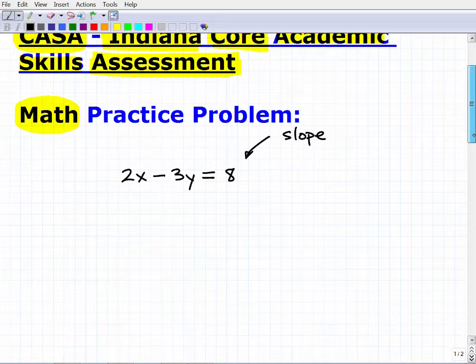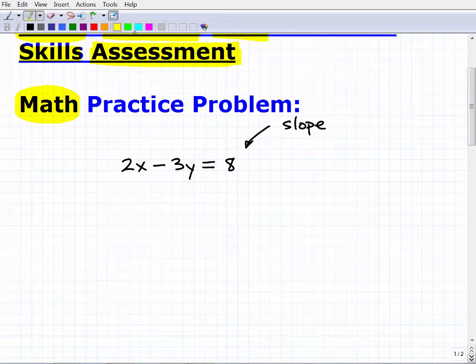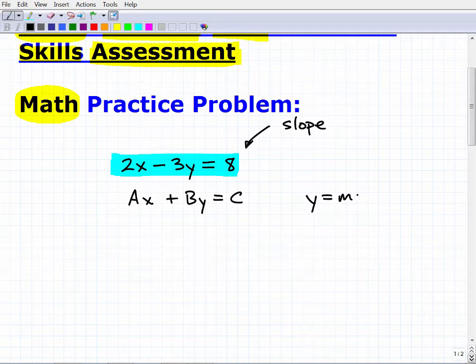A good way to approach this: you can see this is what we call a linear equation written in standard form, which looks like Ax + By = C. But there's another form we can write linear equations in, and that is the y = mx + b form. This particular form is very handy because you can identify the slope immediately - it's the coefficient in front of the x variable. So we can take this equation and rewrite it in this form with a little bit of manipulation, and then we can identify the slope.